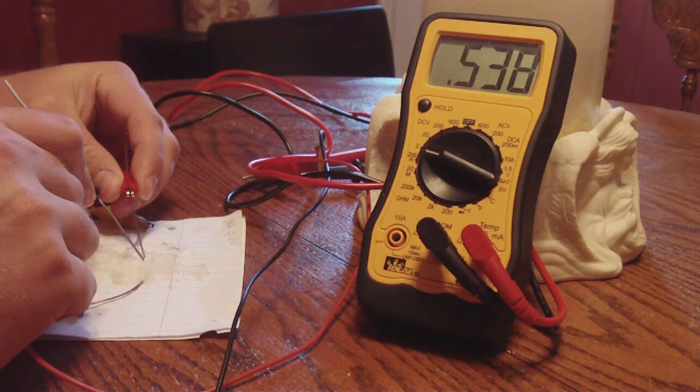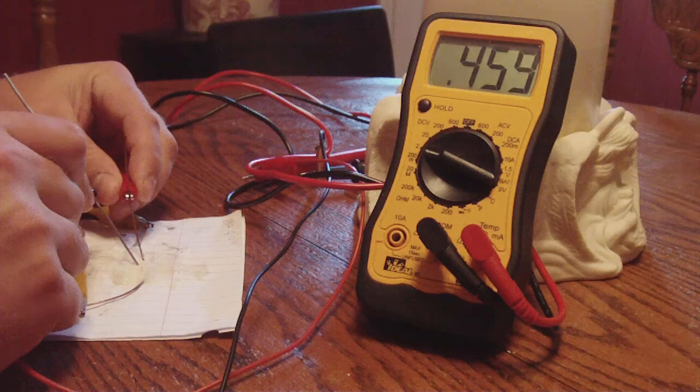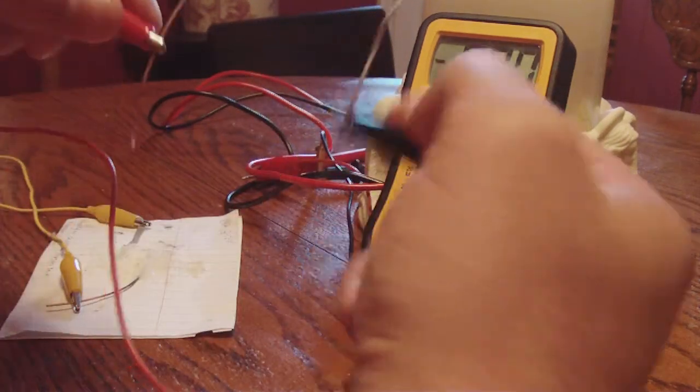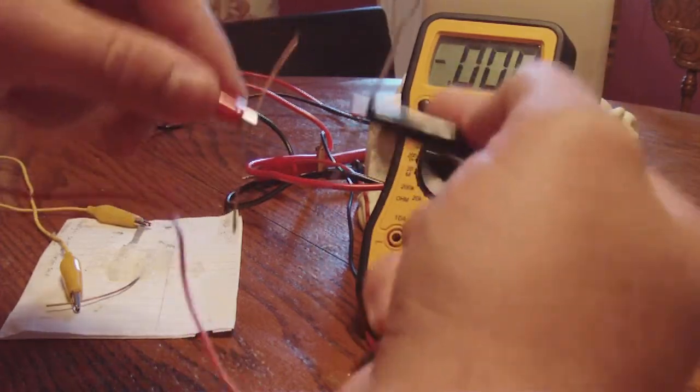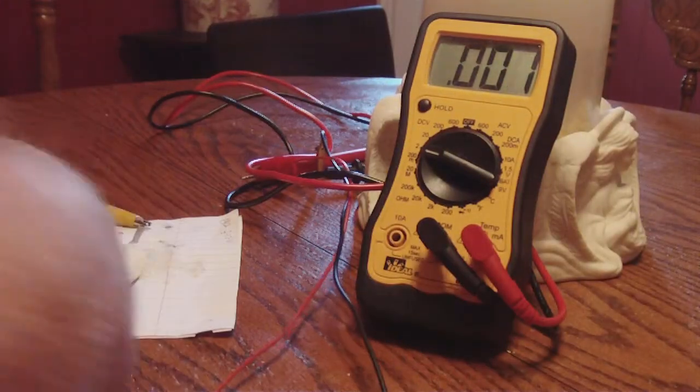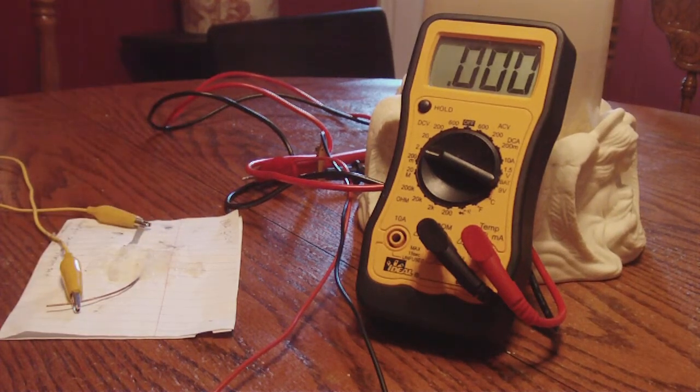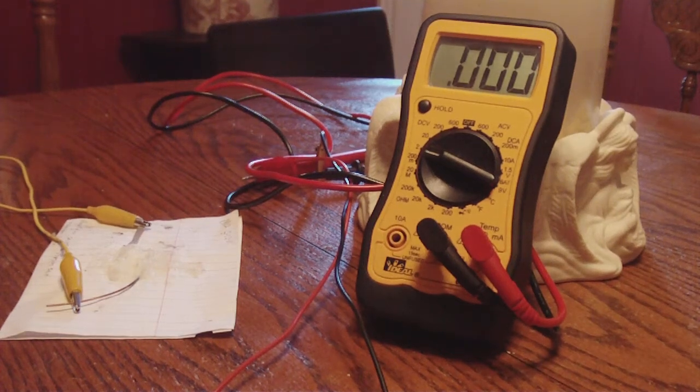As you can see, you get voltages on the skin of the crystal itself. Now all I'm doing is I'm just poking the skin of the crystal cell with these two wires. So as you can see, the electron exchange actually happened on the skin of the crystal and not on the lattice of the crystal.